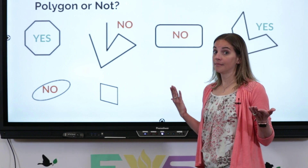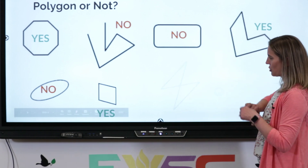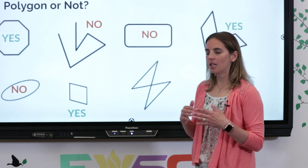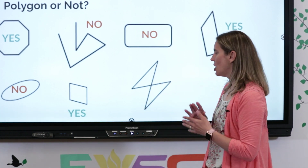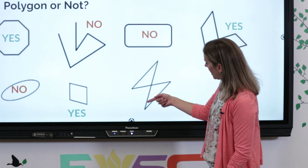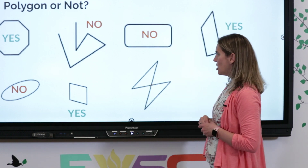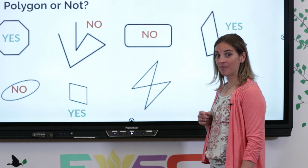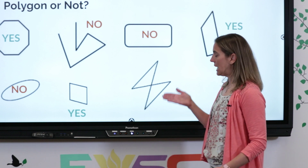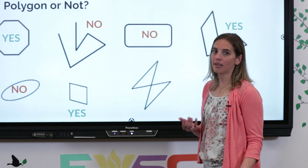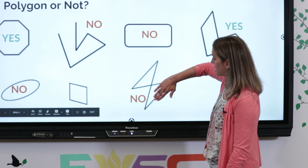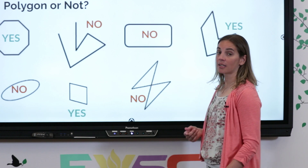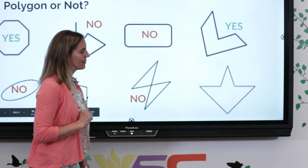How about this guy? I notice it's got sides, all the sides are straight, and there's no open spaces. Polygon or not a polygon? It's a polygon. This one's a tricky one - one more thing that a polygon has to have: none of its lines and sides can overlap. If you notice how this side overlaps this side, it almost looks like somebody took a shape and twisted it. If those sides intersect, it's not a polygon.